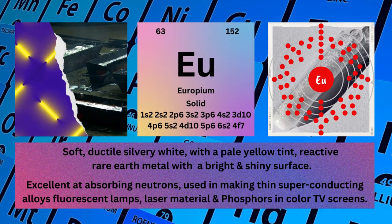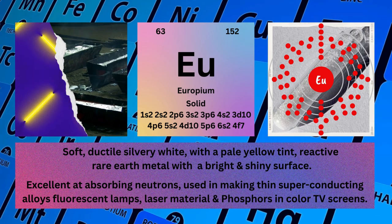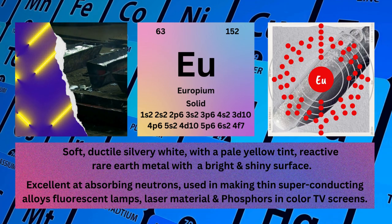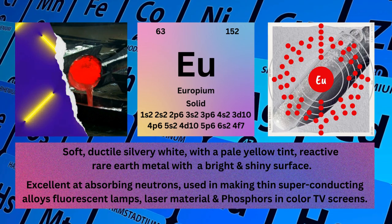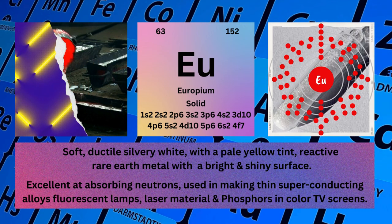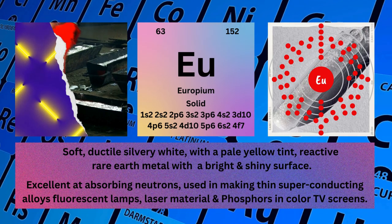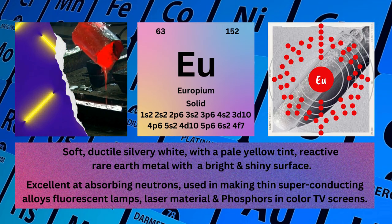Europium is excellent at absorbing neutrons; used in making thin superconducting alloys, fluorescent lamps, laser material and phosphors in color TV screens.